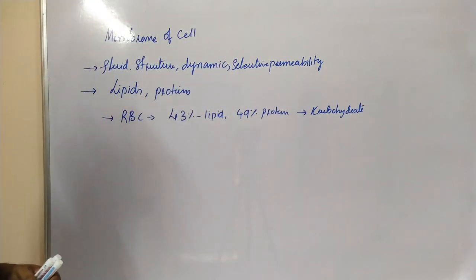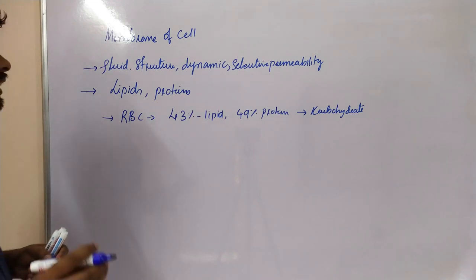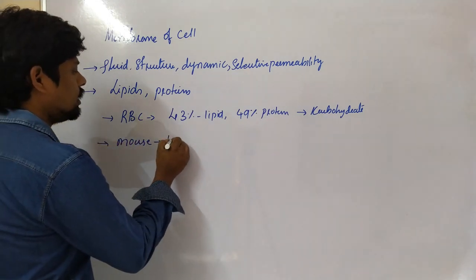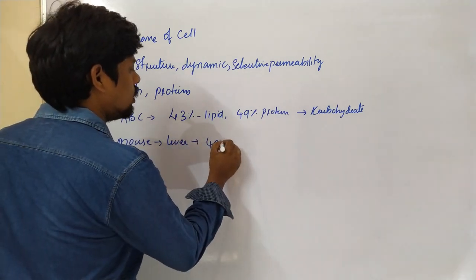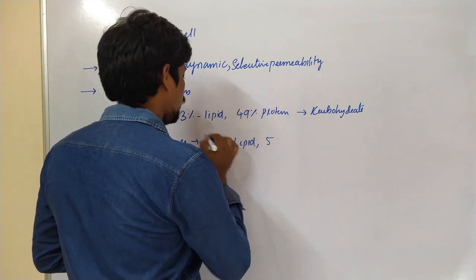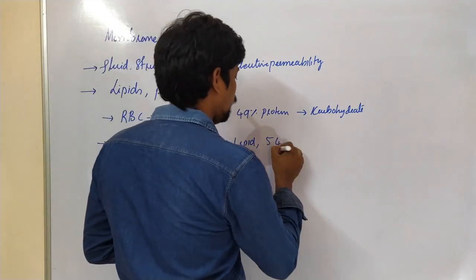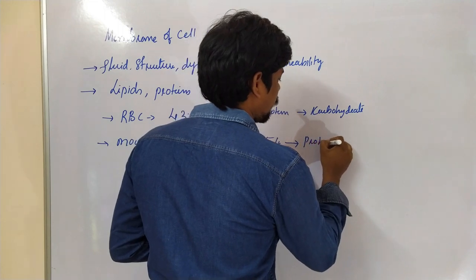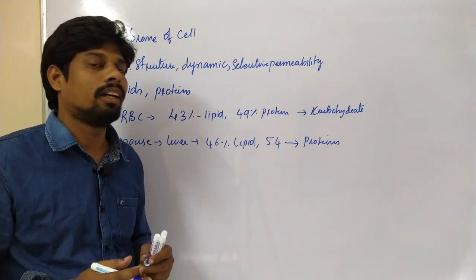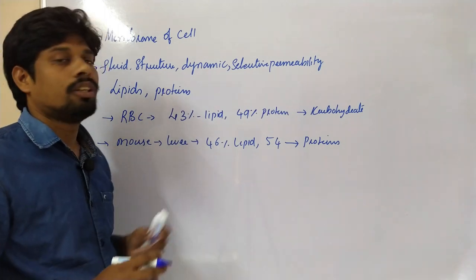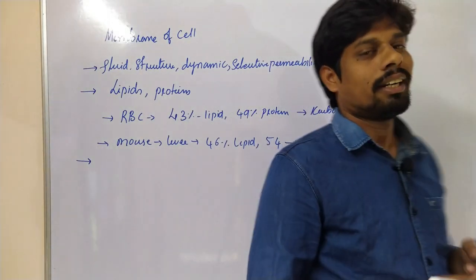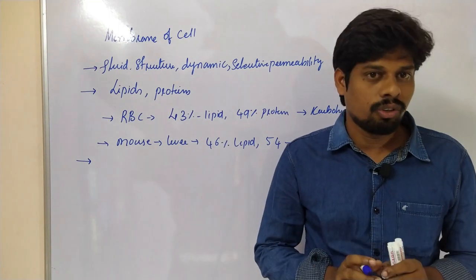Coming to the mouse liver cell, it contains 46% lipid and 54% protein. In this way, the protein content may vary from cell to cell in different organs and tissues. The differentiation between plasma membranes is essentially the protein and lipid ratio — this is a very important point.